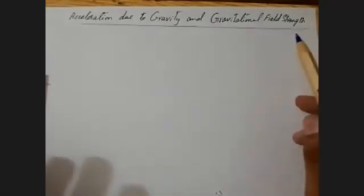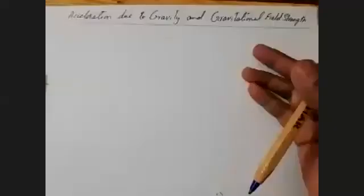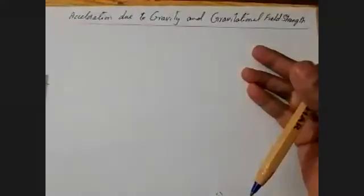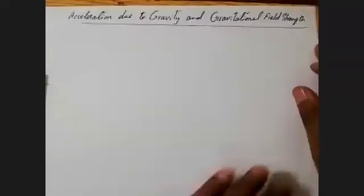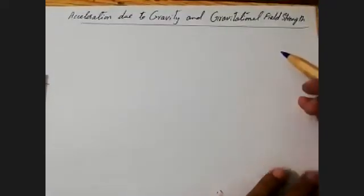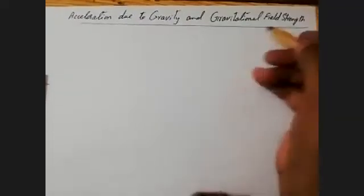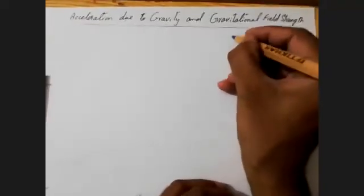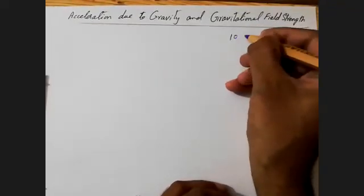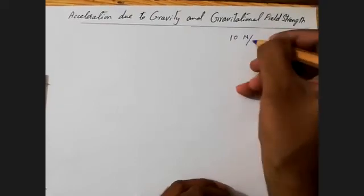In the case of the gravitational field, we are talking about the earth's gravitation in a certain area. Around the magnet, the nail was attracted towards the magnet. In the same way, earth's gravitational field is also showing its attraction in a certain area. So this gravitational field strength of earth is basically 10 Newton per kg.